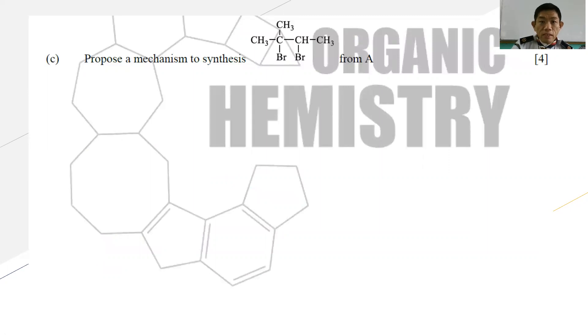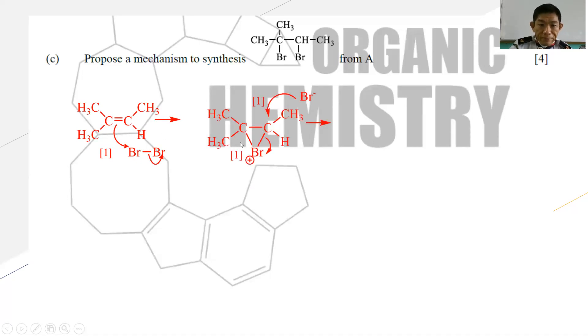Number three, propose a mechanism to synthesize 2,3-dibromo-2-methylbutane from A. This is the addition reaction. If your A is wrong, then most probably some part of this mechanism is wrong. The best way to synthesize this mechanism is starting from the bromine, where you have the alkene attacking the bromine, which is the electrophile. You form a bromonium ion, which is the intermediate. Then the bromide ions attack the carbons and cause heterolytic fission to take place in between the C-Br here, to form your final product. These are the three-step mechanisms that you can use to propose how to synthesize 2,3-dibromo-2-methylbutane from A.